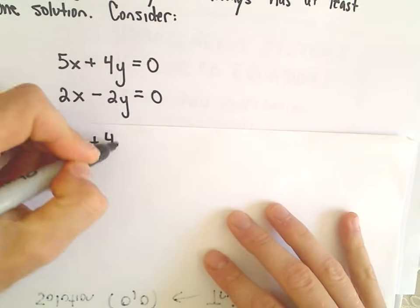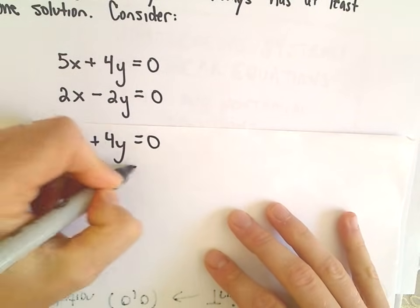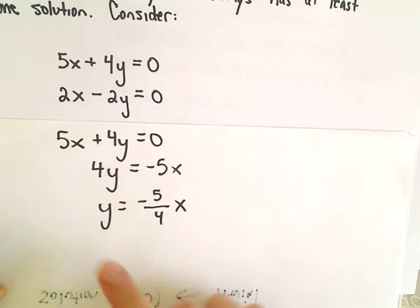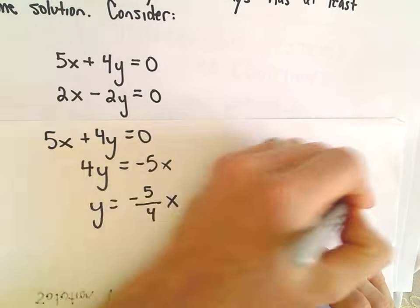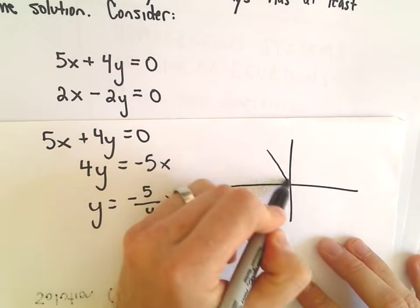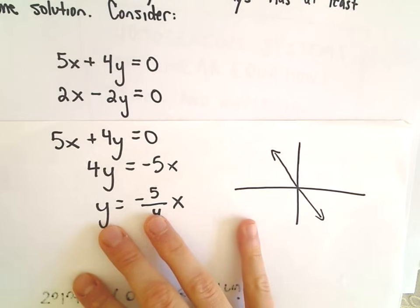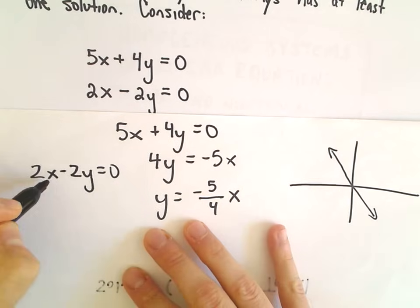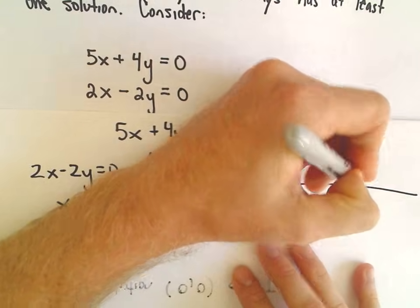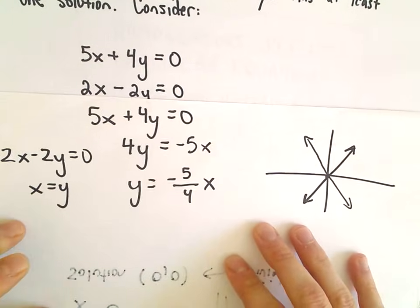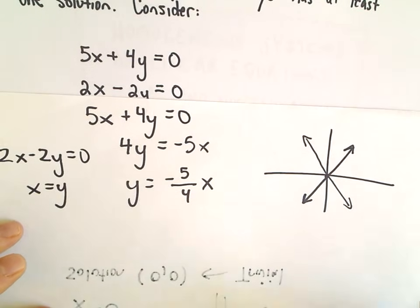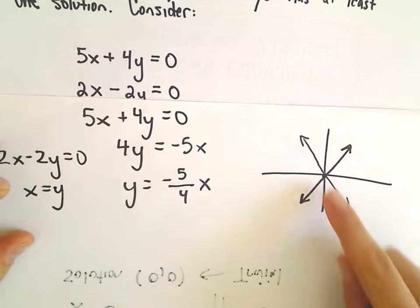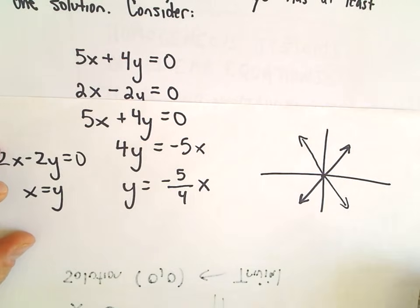You could even graph these — they're certainly just lines. For the first equation, 4y equals negative 5x, dividing by 4 gives y equals negative 5/4 x. In slope-intercept form, the slope is negative and the y-intercept is 0, so it's just a line going down through the origin. For the other line, 2x minus 2y equals 0 gives x equals y, which also passes through the origin. You can think about a lot of these systems in terms of geometry, which is another useful way to think about them.